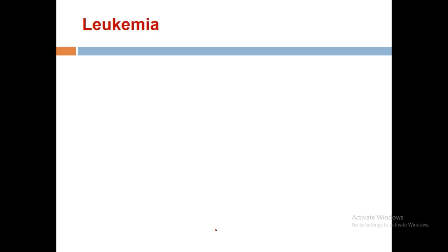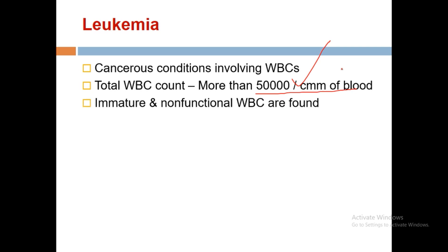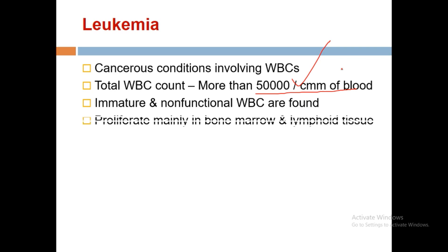Leukemia is a cancerous condition involving WBCs. The total WBC count exceeds 50,000 cells per cubic mm. Importantly, in leukemia the WBCs are immature and non-functional, unlike leukocytosis where WBCs above 11,000 are mostly mature and functional. Leukemic cells proliferate mainly in the bone marrow and lymphoid tissue.